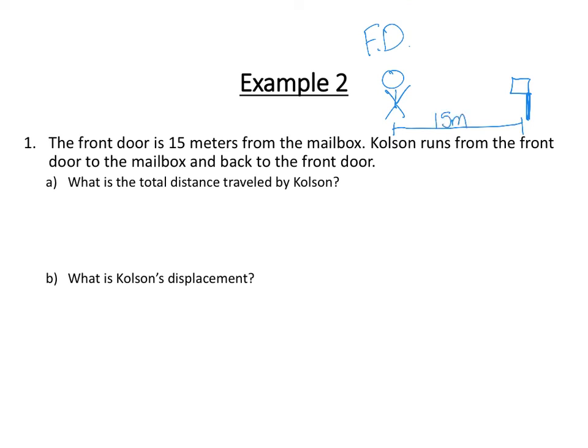So we know that the distance between the front door and the mailbox is fifteen meters, okay? We also know that Colson goes from the front door to the mailbox, so that's fifteen meters, and then he goes back to the front door. So that means he traveled thirty meters, okay? That's his total distance. Total distance does not have a directionality to it.